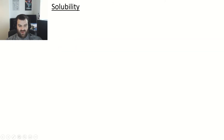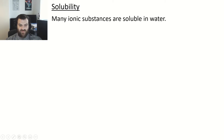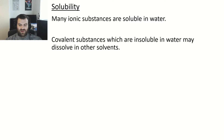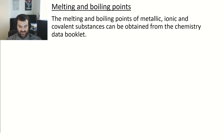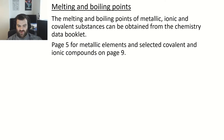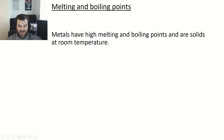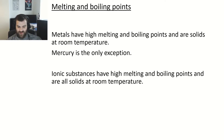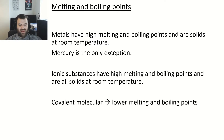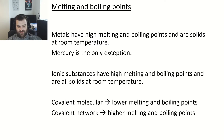Many ionic substances are soluble in water, though some chemicals dissolve in other solvents instead. Looking at melting and boiling points, the data booklet gives values for metallic elements on page five and covalent and ionic compounds on page nine. Metals have high melting and boiling points and are solids at room temperature, except mercury. Ionic substances also tend to have high melting and boiling points. For covalent substances, molecular structures have lower melting and boiling points while covalent networks have higher ones.